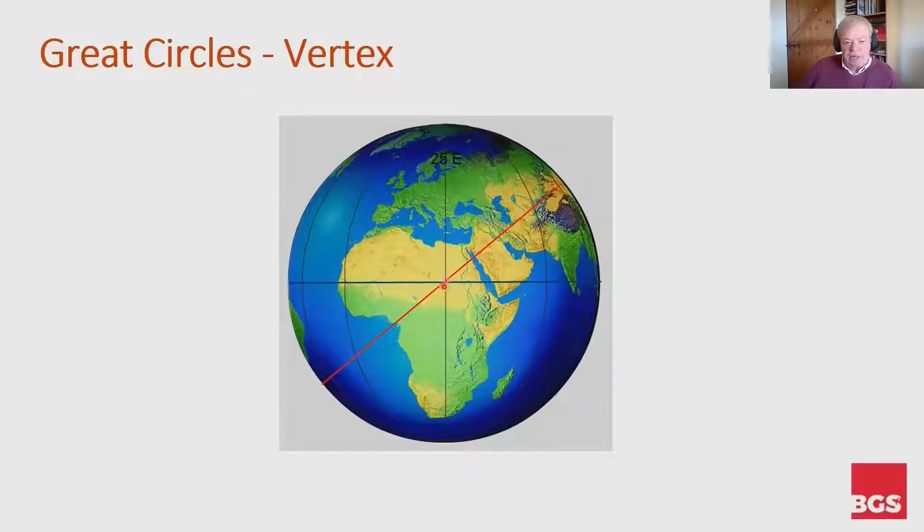We cross the equator at 25 east on a track of 050. So this particular great circle is moving up this way if I'm tracking it. 050 means there's the datum to the true North Pole, and therefore I've got 50 degrees to the right as I cross the equator. Therefore 050 true is the track of that great circle crossing the equator.